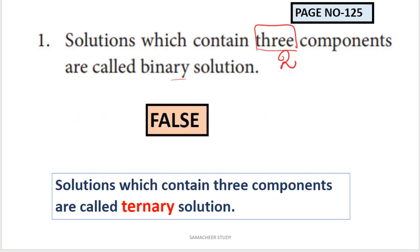True or false: solutions which contain three components are called binary solutions - this is FALSE. Binary means two components. If there are three components, it is called a ternary solution. The correct statement is: solutions which contain two components are called binary solutions.